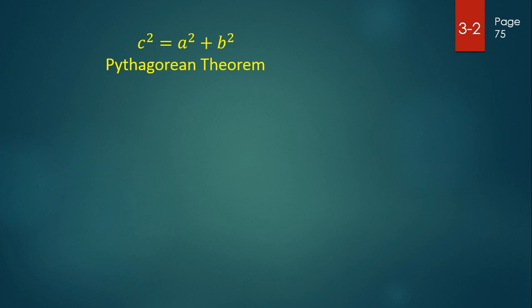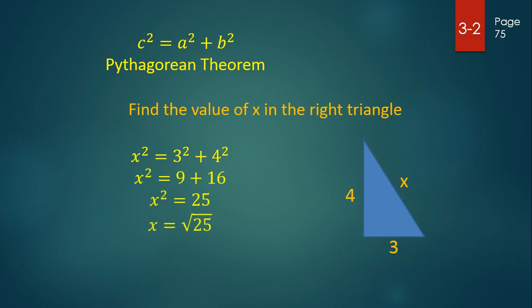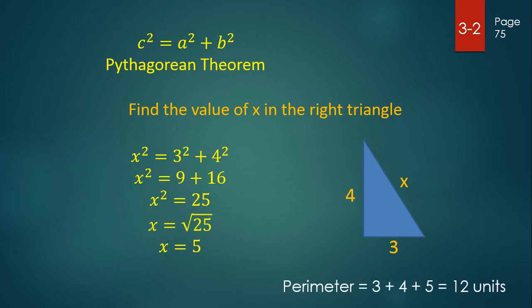Now you probably remember the Pythagorean Theorem — it relates the lengths of the sides of a right triangle. Knowing that, we can find the length of any side in a right triangle if we know the lengths of the other two sides. So if we wanted to find the value of x, which is the hypotenuse, knowing that the legs measure three units and four units, we can use the Pythagorean Theorem to find that x equals five units. If you know the lengths of all three sides, you can also find its perimeter — the perimeter is simply the sum of the lengths of the three sides, so this triangle has a perimeter of twelve units.